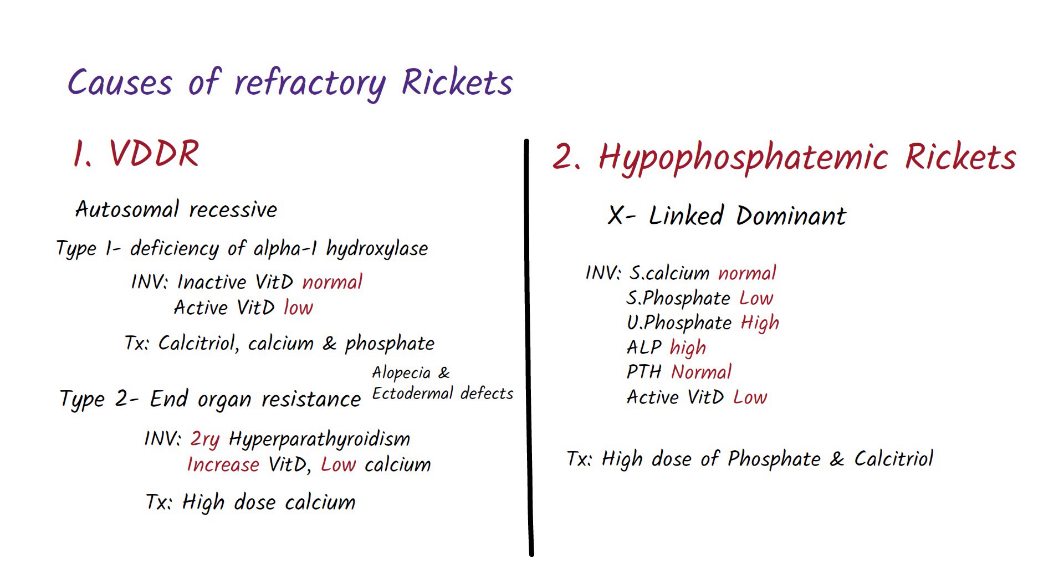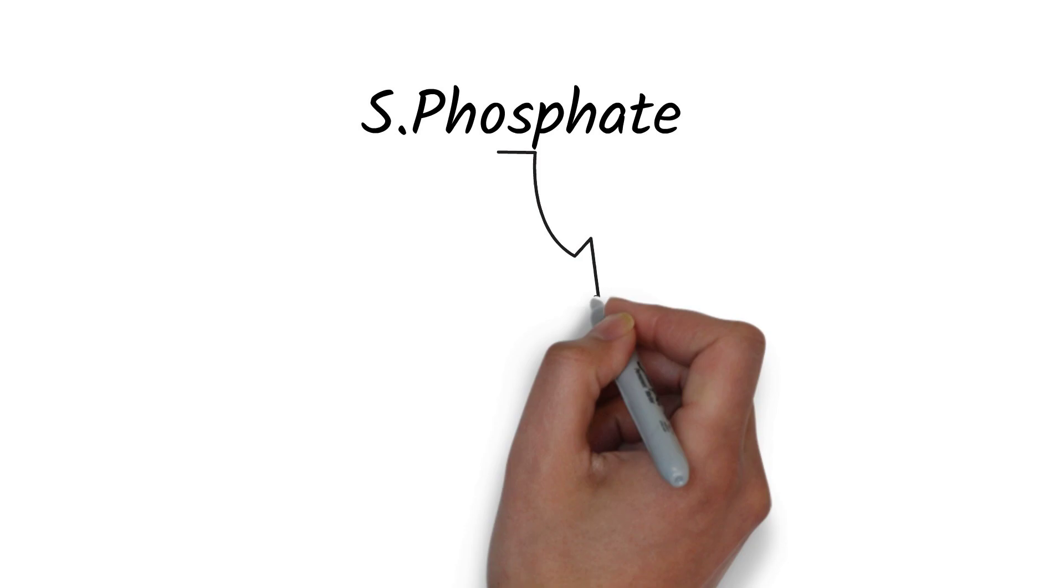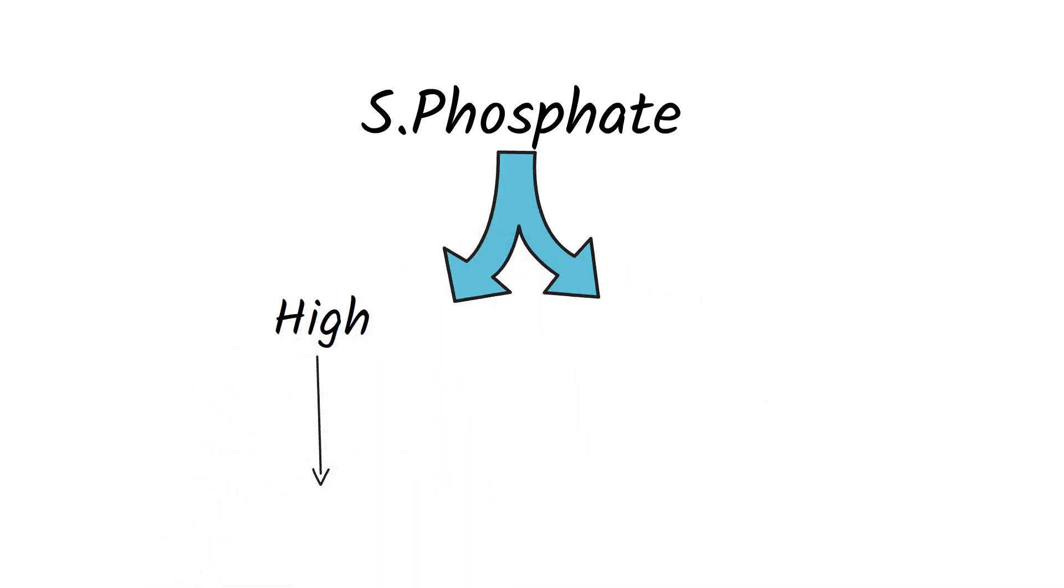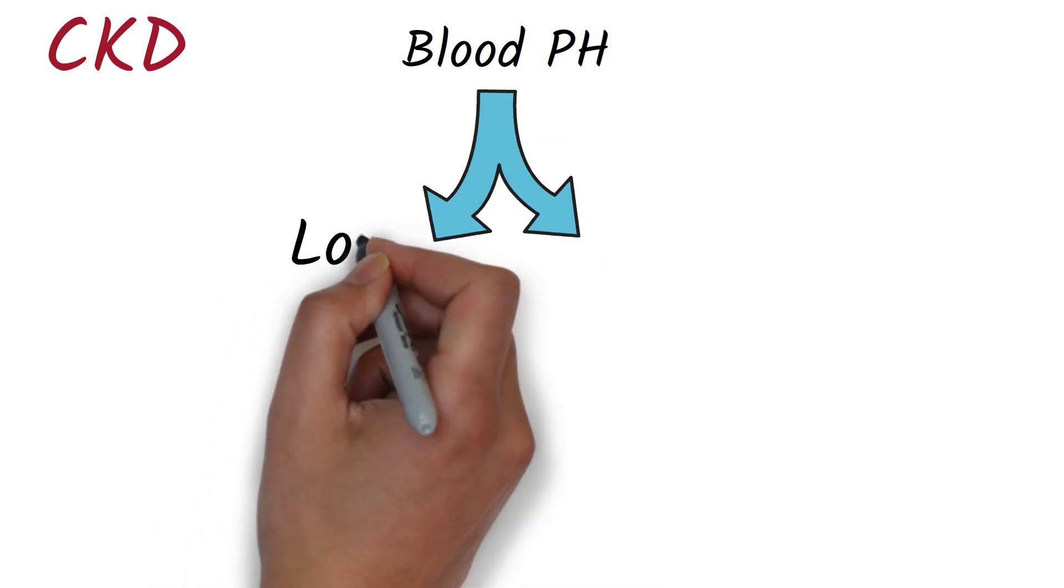So now let's look at how to find the cause of refractory rickets. First we have to check the serum phosphate level. If the serum phosphate level is high, this is most likely due to chronic kidney disease because the kidney cannot excrete the phosphate. If the serum phosphate level is low or normal, we go on to check the pH of the blood. If the pH is low, this is due to renal tubular acidosis.